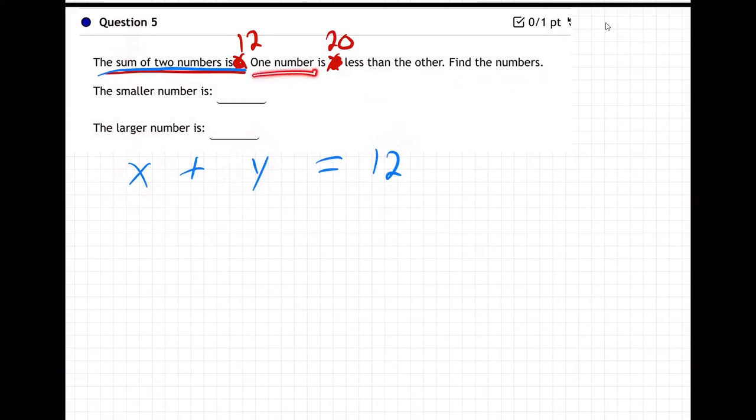Next, one number is 20 less than the other. Okay, so that means one number X equals 20 less. Now that's 20 taken away at the back. You remember that. That's the tricky part of that phrase that a lot of people forget.